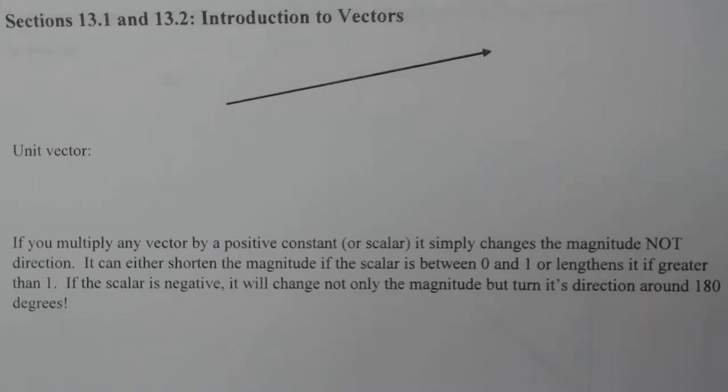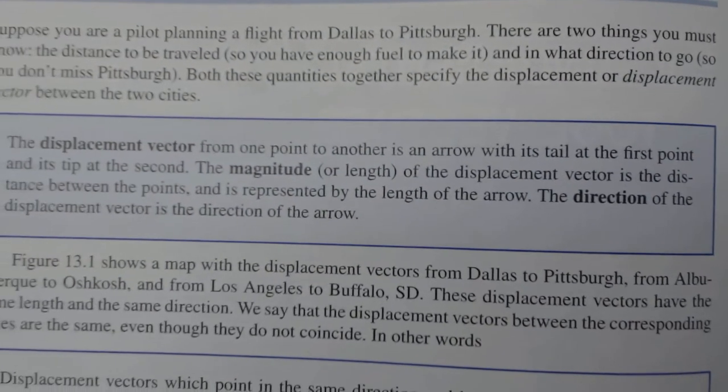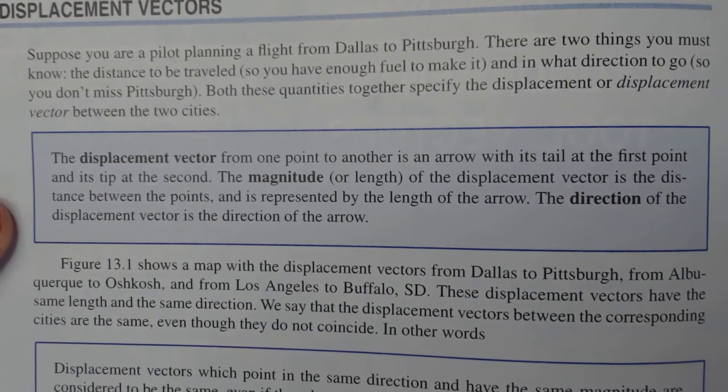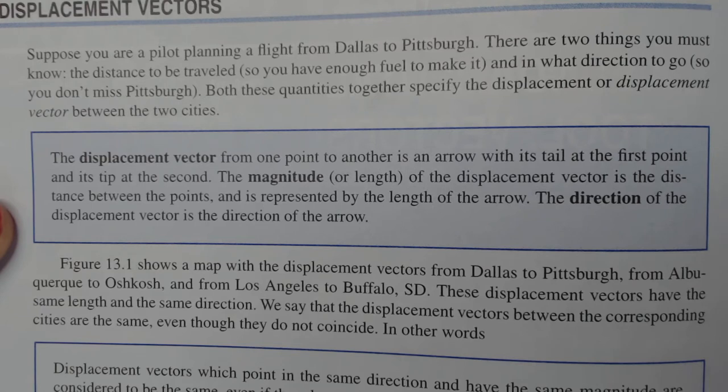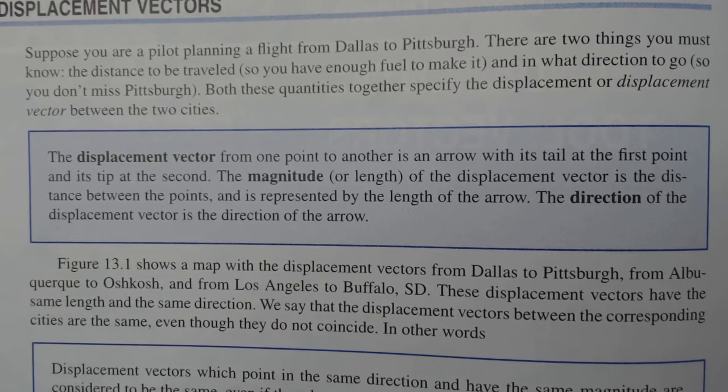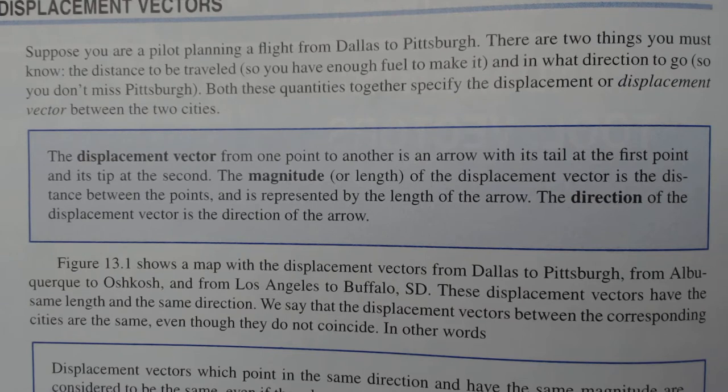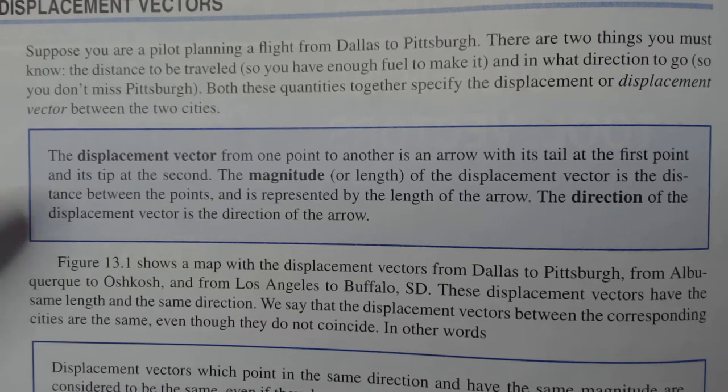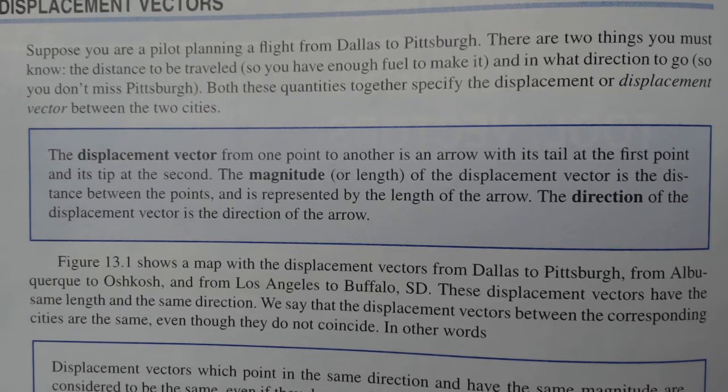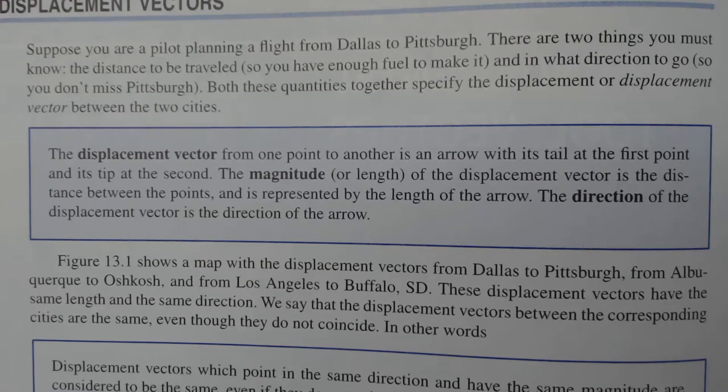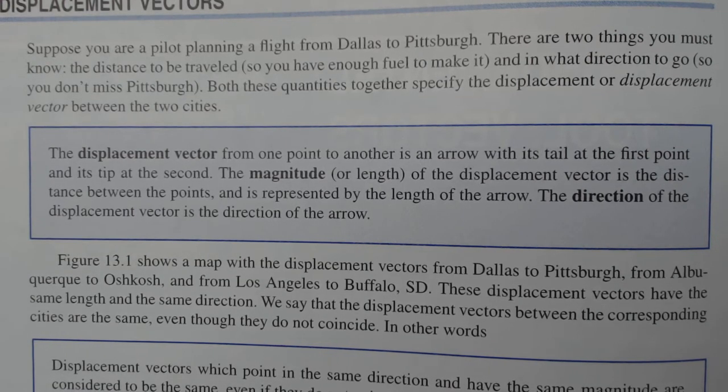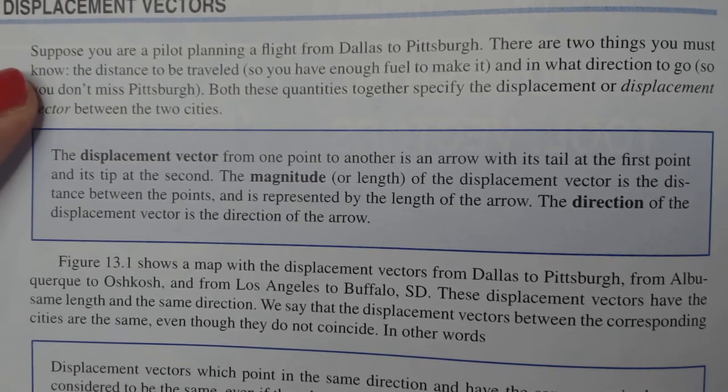So let's think about what a vector is. We're going to go to the textbook and read the definition. Yes, I know students hate textbooks, but you ought to learn how to read them. So the first thing we're going to talk about is this displacement vector. So let's read the blue box. The displacement vector from one point to another is literally an arrow with its tail at the first point and its tip at the second. The magnitude or length of the displacement vector is the distance between the points and is represented by the length of the arrow. The direction of the displacement vector is the direction of the arrow. So basically it's like pointing from one spot to another. That's what we consider displacement vectors.